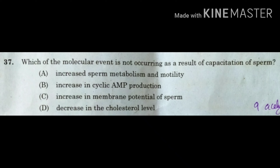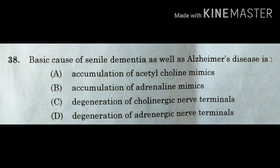When your CSIR NET examination is concerned, the prevention of polyspermy in sea urchin is very important, so study that portion also. Next question: the basic cause of senile dementia as well as Alzheimer's disease is — Option A: accumulation of acetylcholine mimics; Option B: accumulation of adrenaline mimics; Option C: degeneration of cholinergic nerve terminals; Option D: degeneration of adrenergic nerve terminals.